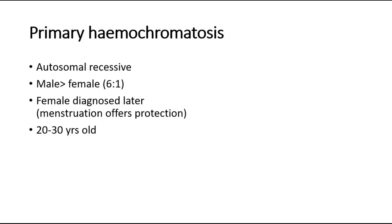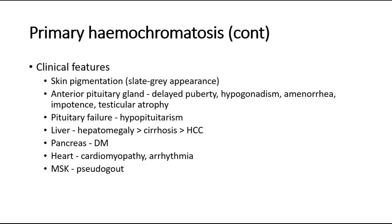For clinical features of primary haemochromatosis, the patient might have skin pigmentation and a slight grey appearance. If the iron is deposited in the anterior pituitary gland, the patient might complain of delayed puberty, there might be hypogonadism, amenorrhea, impotence or decreased libido, and also testicular atrophy. It can also cause pituitary failure, which results in hypopituitarism.